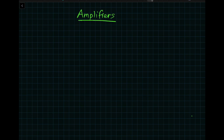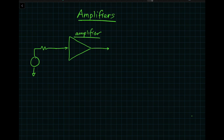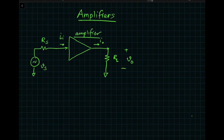Now we start with a new topic: amplifiers. Let's look at an amplifier as a building block. We generally show an amplifier as a triangle. The amplifier is driven by a preceding stage, modeled as an AC source with source resistance RS, and drives the next stage with load resistance RL. Input current II flows into the amplifier, output current IO comes out, V0 is the output voltage, and VI is the input voltage. This is all AC analysis.